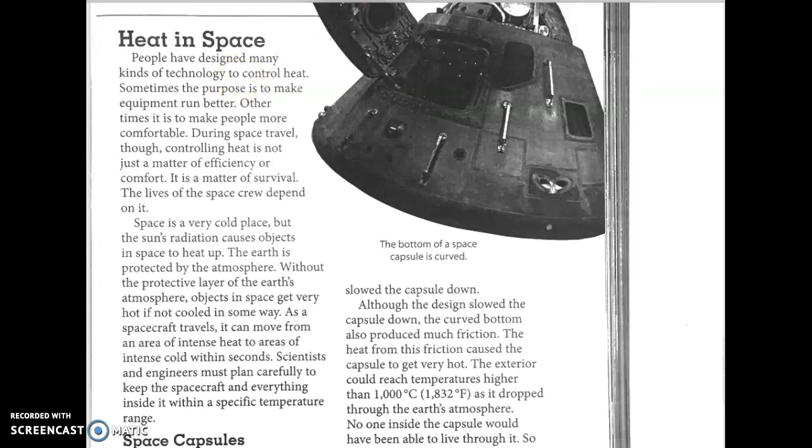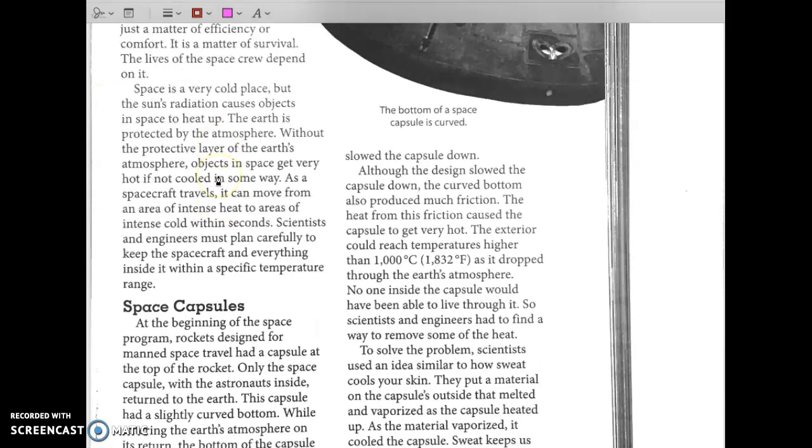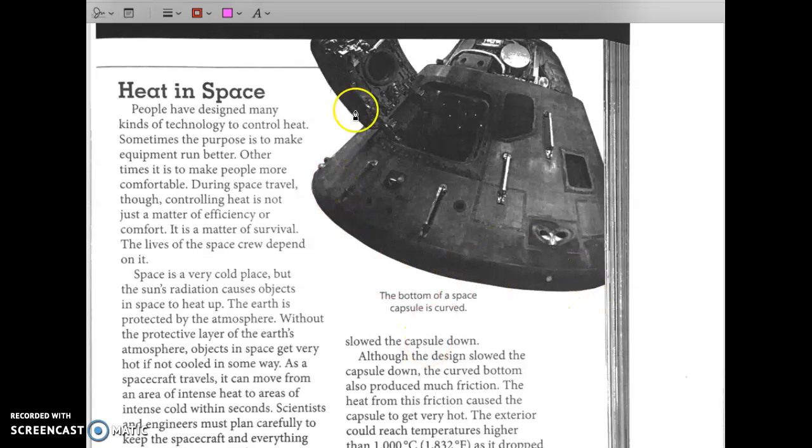I would like to challenge you to underline or highlight anything that you think might be important or anything that you find interesting. So I'll do this with you. Space capsules. At the beginning of the space program, rockets designed for manned space travel had a capsule at the top of the rocket. Only the space capsule with the astronauts inside returned to the earth. This capsule had a slightly curved bottom. While entering the earth's atmosphere on its return, the bottom of the capsule faced toward the earth. This design slowed the capsule down. This is the space capsule.